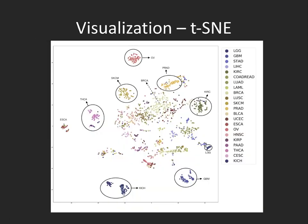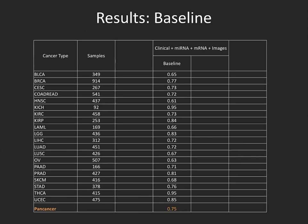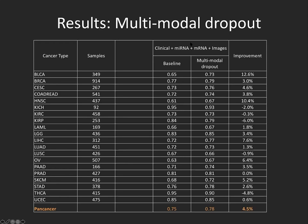We primarily focused on how well this multimodal model predicts overall survival. You can see all the different cancers and sample sizes. Here is the baseline performance using the four data modalities. We then investigated multimodal dropout — a concept similar to standard dropout in convolutional nets, but where we force certain modalities to be removed from the data. When we did that, we actually improved performance in almost all cancer sites, so forcing missing data modalities during training improved survival prediction.